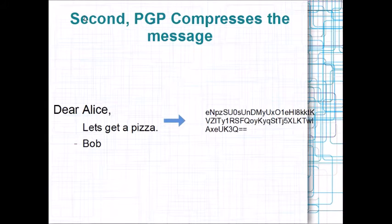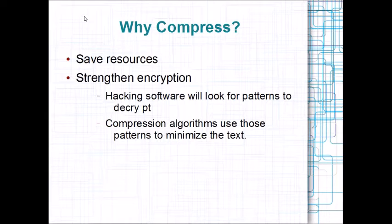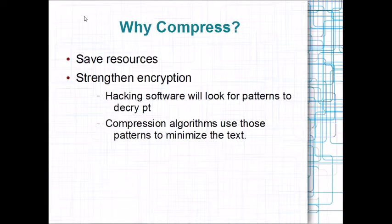The second step is that the PGP tool compresses the message. I used an online compression tool to compress this message down to that. There are some advantages to compressing the message before doing the actual encryption. The first advantage is that it saves resources — there's less room you have to store in memory or on disk. The second advantage is that it strengthens the encryption, because a lot of hacking software that tries to decrypt these things works by looking for patterns. When you compress something, the patterns disappear or are reduced, because compression algorithms look for patterns as part of the compression process. This makes it a lot harder for hacking software to decrypt it.